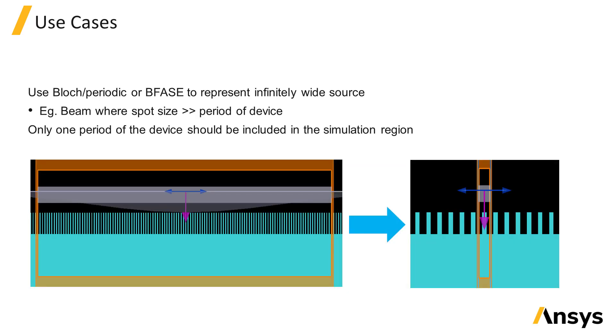We typically use the plane wave source to represent beams that are incident on periodic structures where the spot size of the beam is much larger than the period of the device, so the beam width can be approximated as being infinitely large.